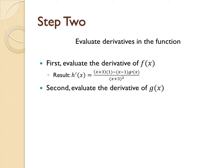Next, we will evaluate the derivative of g of x. Our derivative of g of x will be 1 because it is x plus a constant and the derivative of a constant is always 0. Thus, our result is h prime of x equals x plus 3 times 1 minus x minus 1 times 1 all over x plus 3 squared.